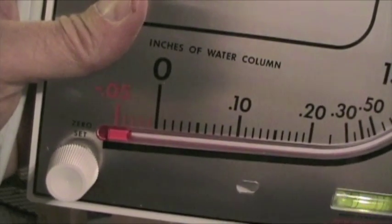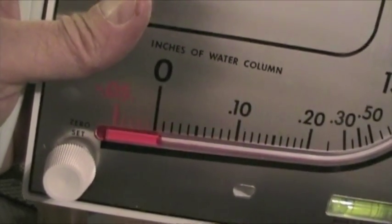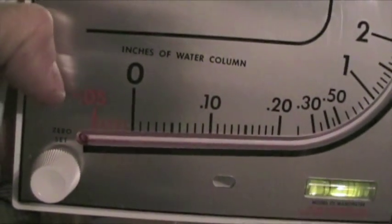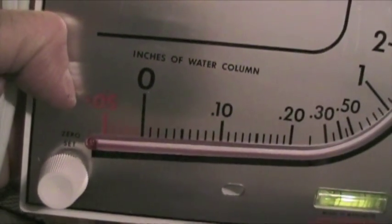You fill it, get as close to zero as you can, then you take the adjustment knob and you can turn it right or left and zero it.